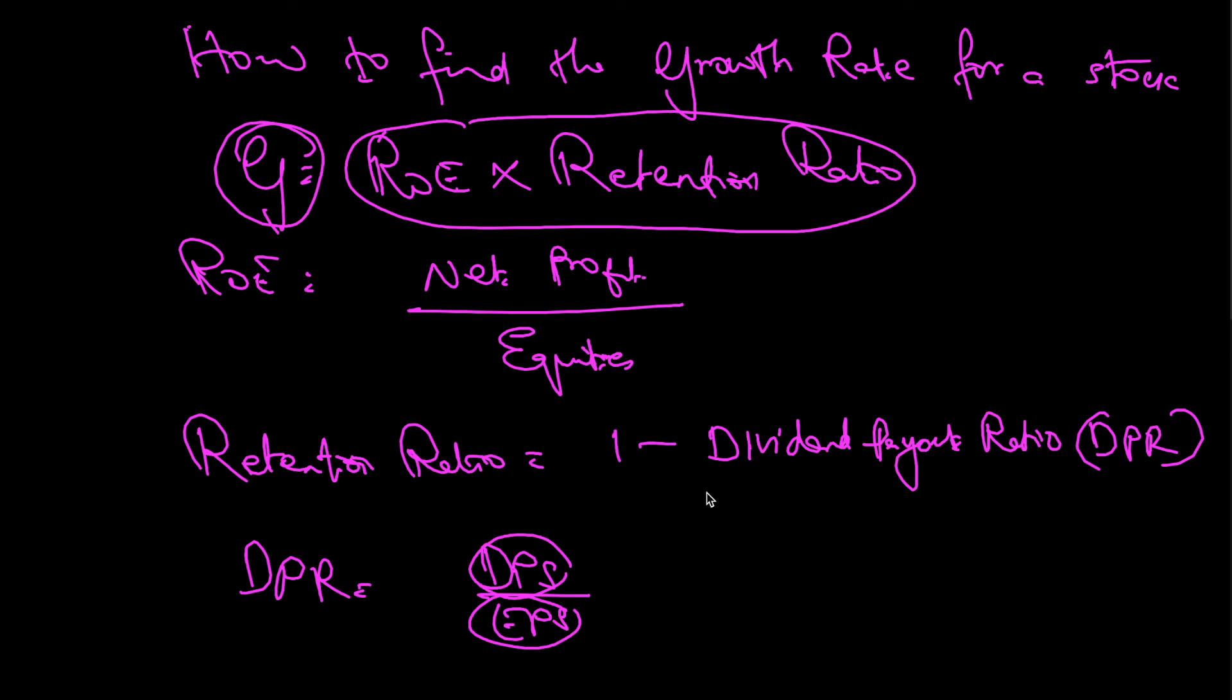In the exam, they will ask for the growth rate and what people will look for is the straight formula for ROE and retention rate, which you will not get because they would have given information of DPS and EPS. From DPS and EPS, you have to find out DPR. From DPR, you have to find out the retention rate, and you have to then apply that retention rate to get the growth rate.